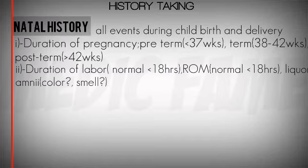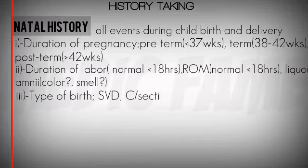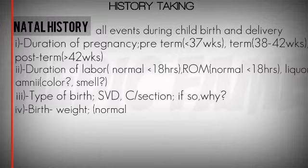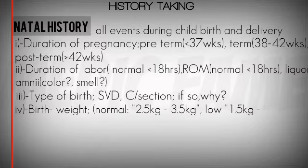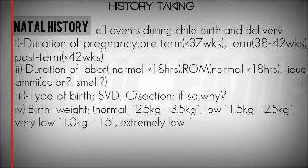The third component of natal history is the type of birth, whether it was SVD or caesarean section, and if so, why. The fourth is birth weight, which can be normal, low, very low, or extremely low.